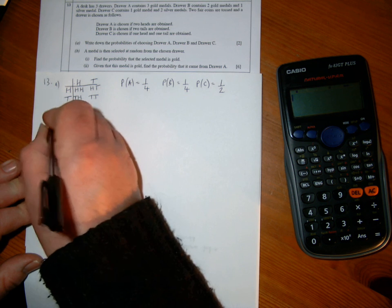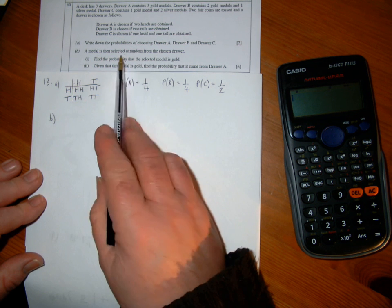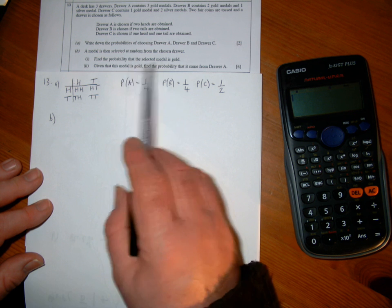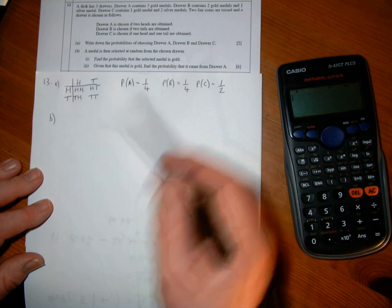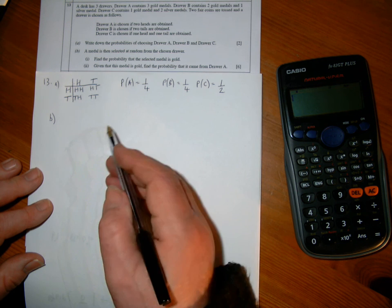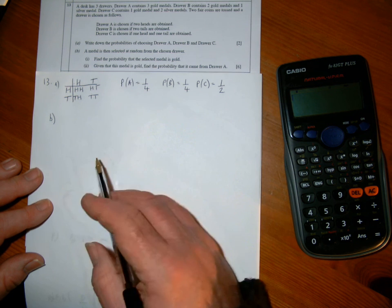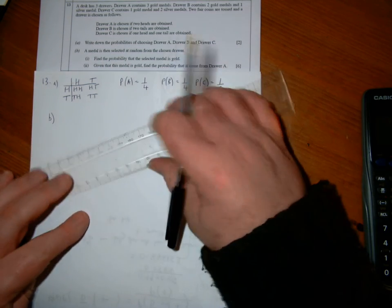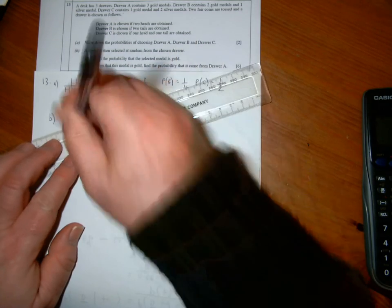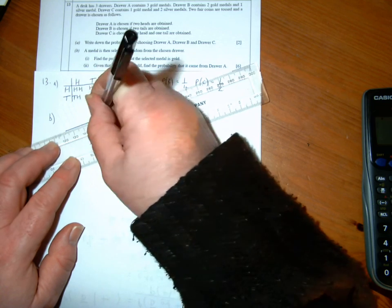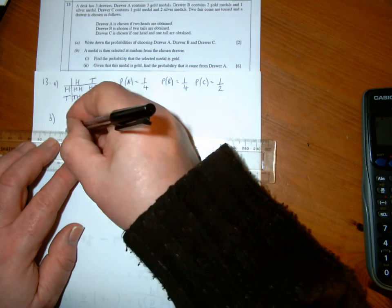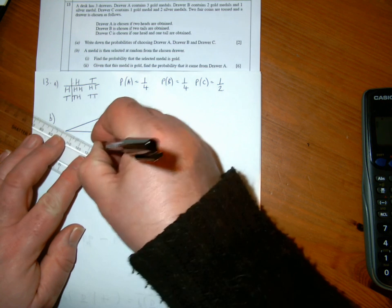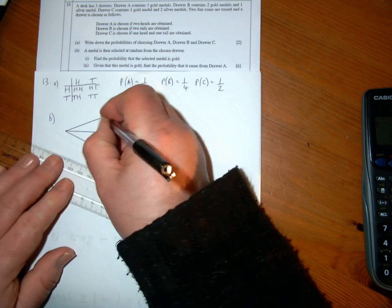Part B: we don't take the medal out, so we want to know the probability of a medal being gold. What happens is a sequence of two events. I have to pick a drawer and then choose a medal. My first choice: I've got three choices. Am I choosing drawer A, drawer B, or drawer C?